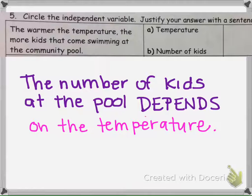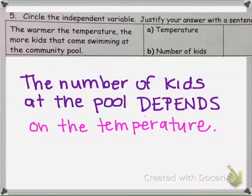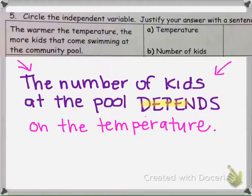The number of kids at the pool depends on the temperature. If we flip it and wrote it as 'the temperature depends on the number of kids at the pool,' that sounds funny. The temperature outside has no effect on how many kids there are. If there are 50 kids outside, the temperature is not going to then be warmer. But the number of kids at the pool can be affected by the temperature. So, in purple here, the number of kids is the dependent variable, and the independent variable is the temperature.